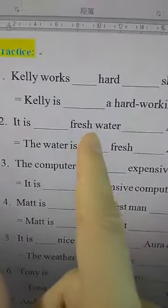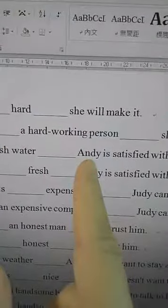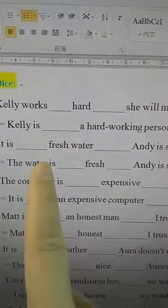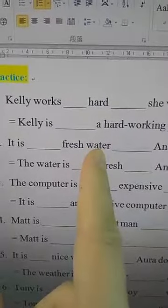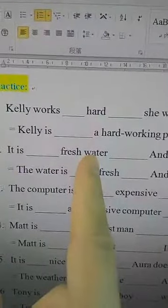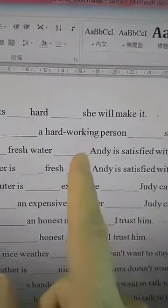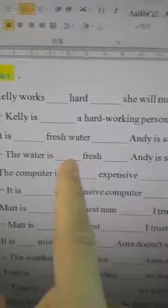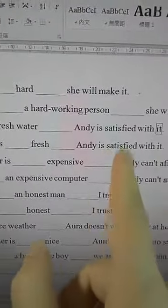Number two: 'It is ___ freshwater ___ Andy is satisfied with it.' Water is a noun, but water is an uncountable noun, so you don't have to use 'a' or 'an.' The answer is 'such.' But also: 'The water is fresh' — 'fresh' is an adjective — so we can say 'The water is so fresh that Andy is satisfied with it.' Both patterns work.